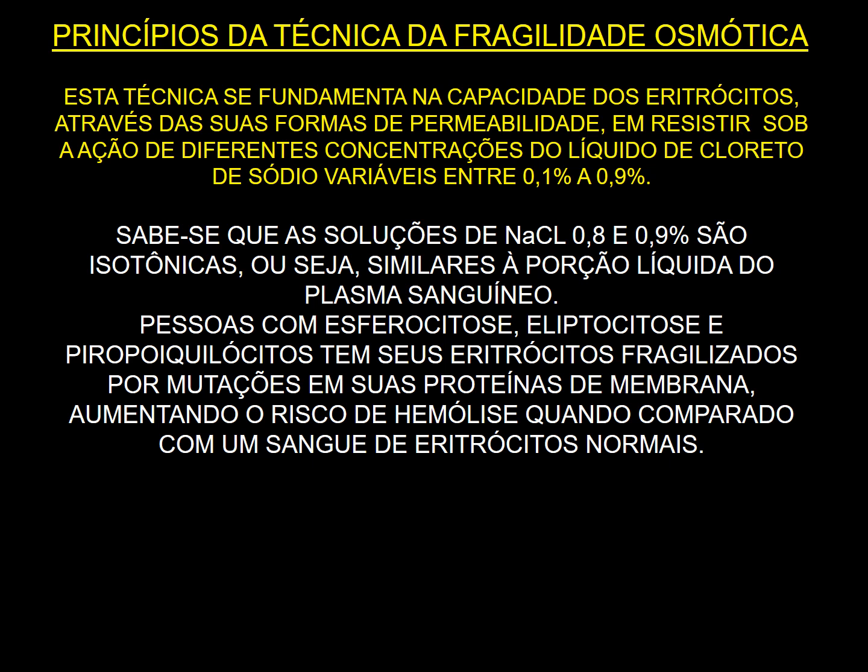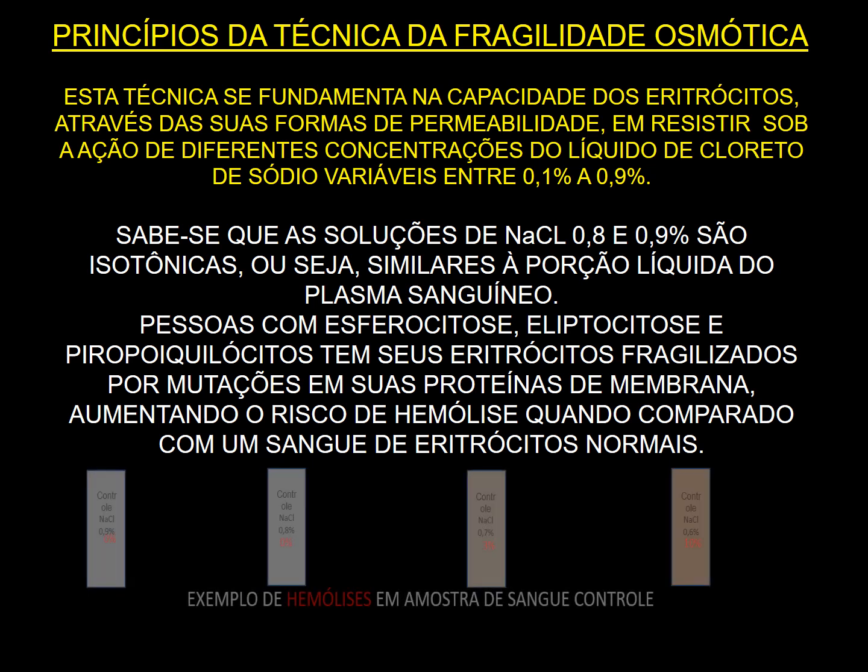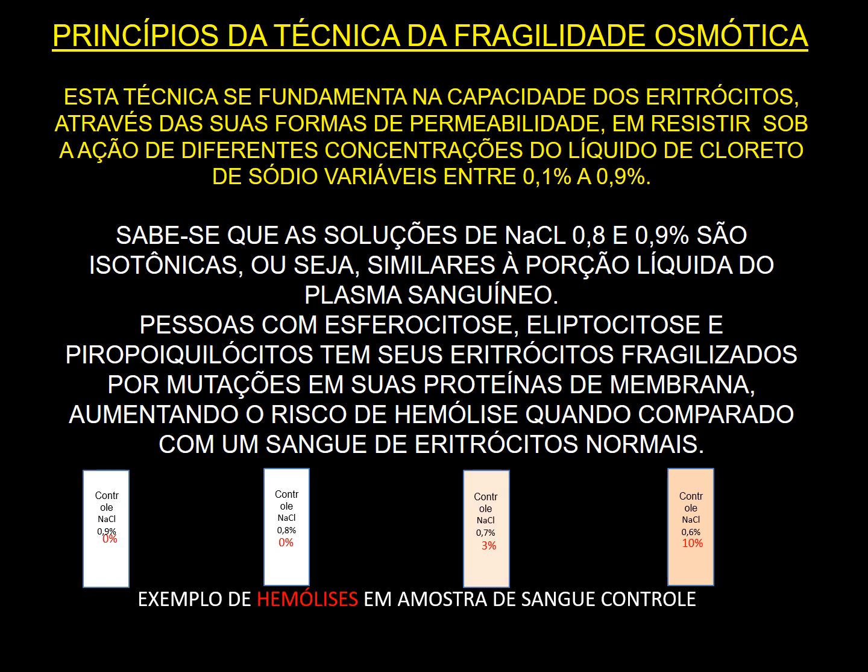Ocorre um aumento do risco de hemólise quando comparado com sangue de eritrócitos normais. Aqui estou dando um exemplo de hemólise em amostra de sangue controle, que sempre se usa no teste de fragilidade osmótica. No 0,9% e 0,8% praticamente não houve alterações, enquanto no 0,7% já se observa uma pequena alteração na cor do líquido, porque as hemácias começaram a hemolizar discretamente, e no 0,6% uma hemólise maior.